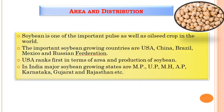Next, you can see the area and distribution. Soybean is one of the important oil and pulse crops grown all over India as well as in the world. The important soybean growing countries are USA, China, Brazil, Mexico, and the Russian Federation. The USA ranks first in terms of world production of soybean.